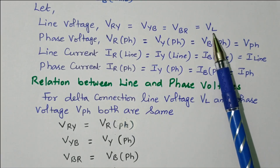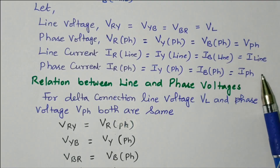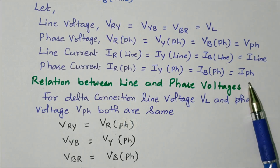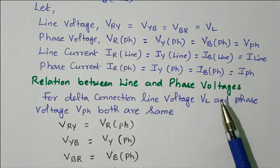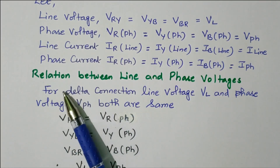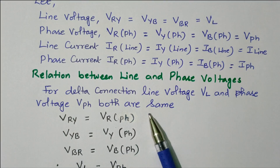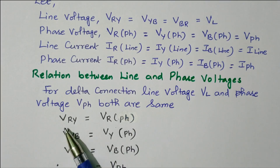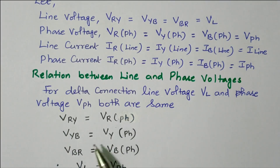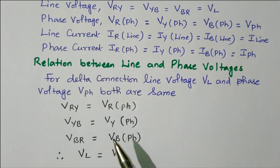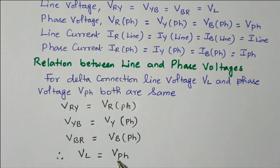Now we will see the relation between line and phase voltages. For delta connection, line voltage VL and phase voltage are equal — we already discussed in the diagram. So VRY = VR phase, VYB = VY phase, VBR = VB phase. Therefore, line voltage VL equals phase voltage VPH. In delta connection, line voltage is equal to phase voltage.